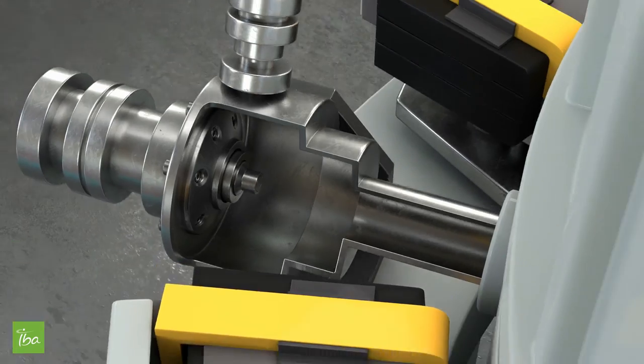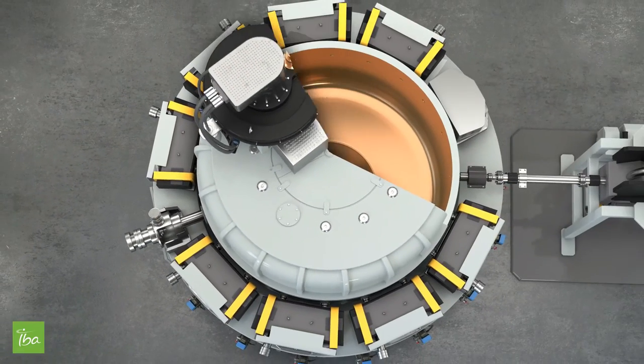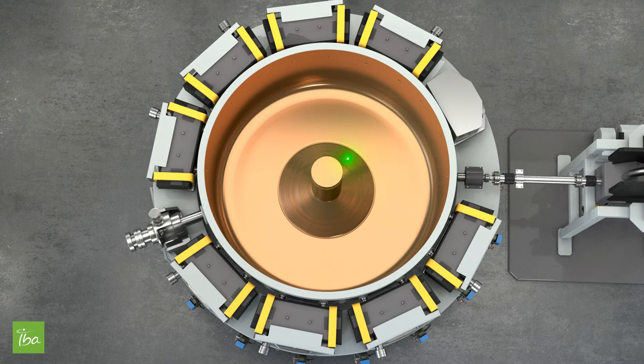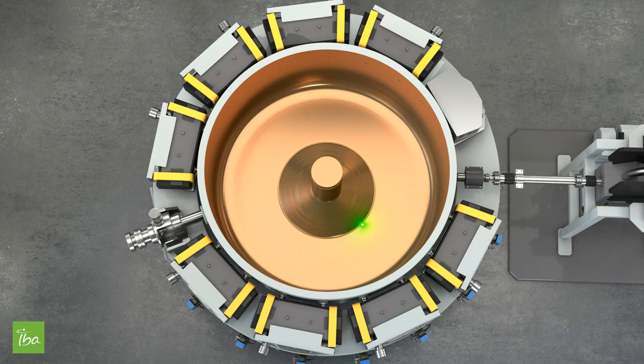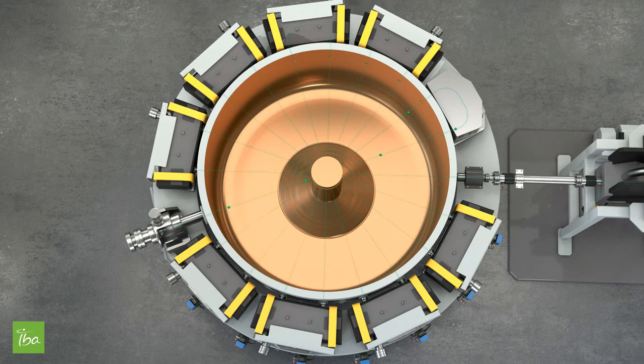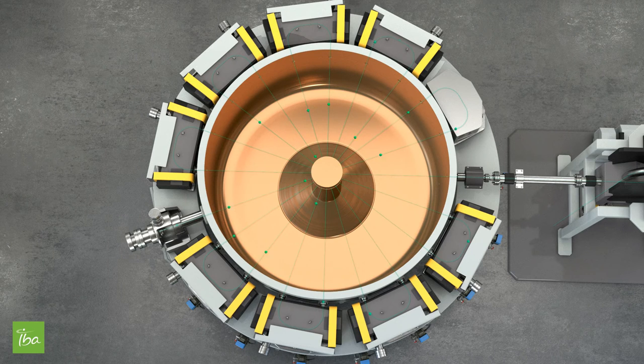When electrons reach the inside of the cavity, the RF system produces an electric field between the external wall of the cavity and the central pillar. The electrons are therefore attracted by the pillar. When going through it, the polarity of the electric field is reversed in such a way that when traveling in the second part of the cavity, the electrons are accelerated a second time.